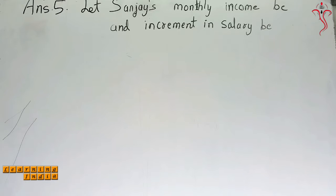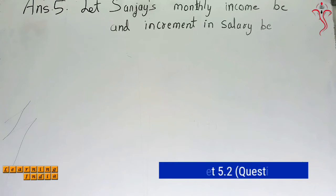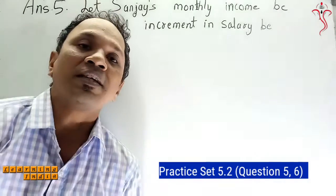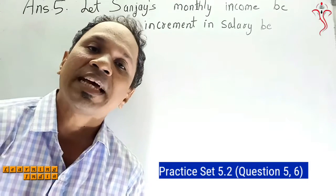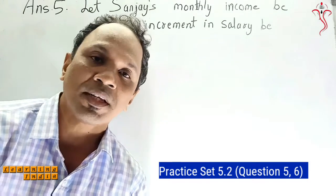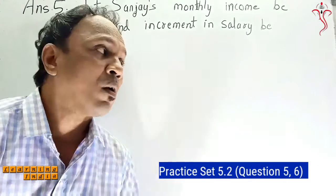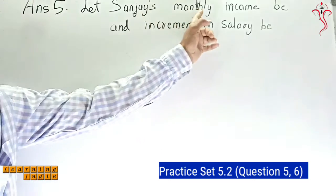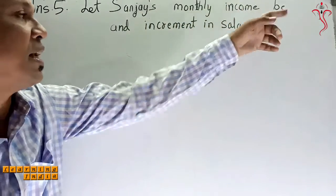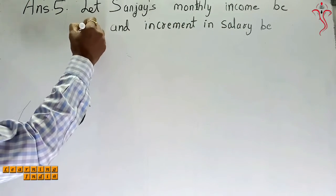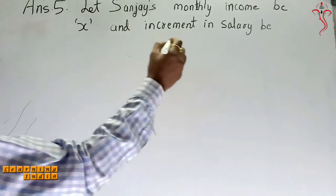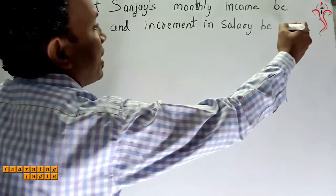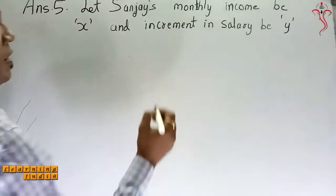Question number 5. They have told you that Sanjay is getting a monthly income and there is also an increment in his salary per year. So what do we do here — we just write it down. Let Sanjay's monthly income be X and his increment in salary be Y.